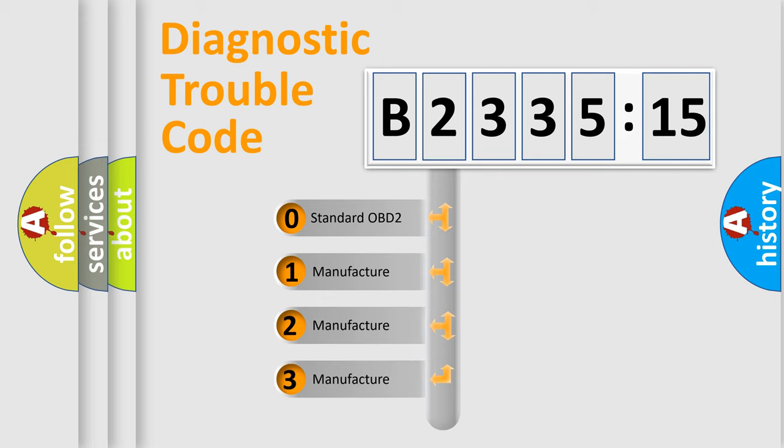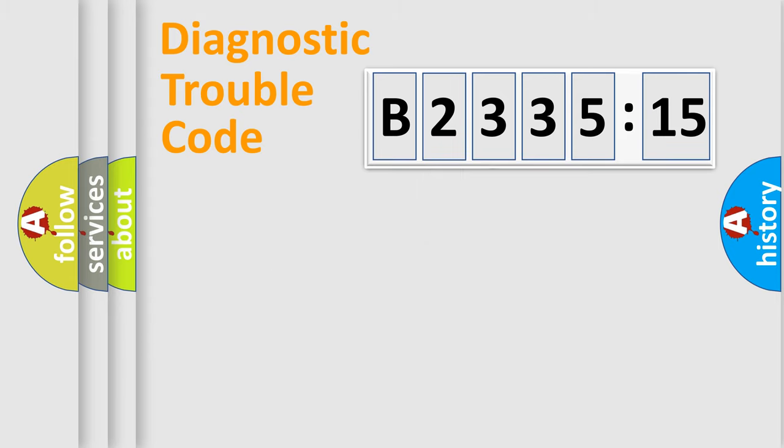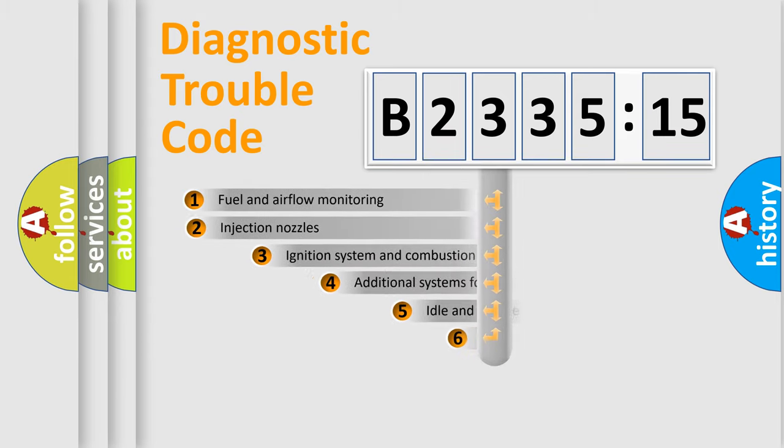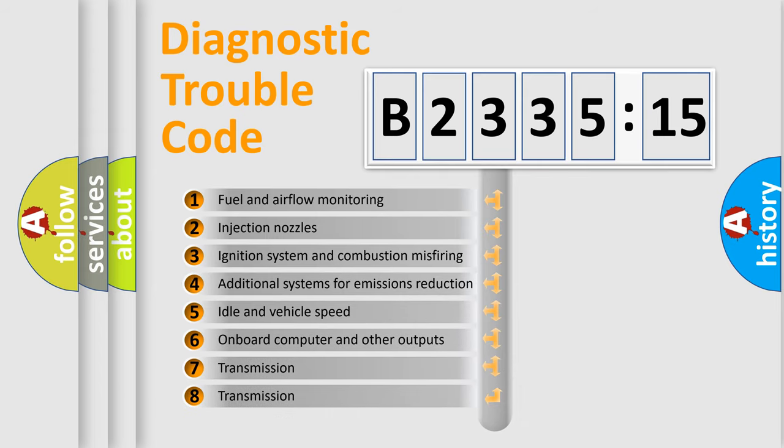This distribution is defined in the first character of the code. If the second character is zero, it is a standardized error. In the case of numbers 1, 2, or 3, it is a manufacturer-specific error expression.